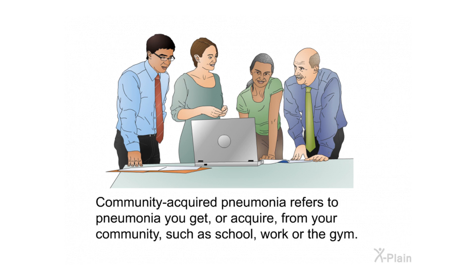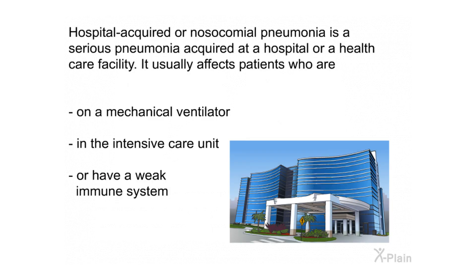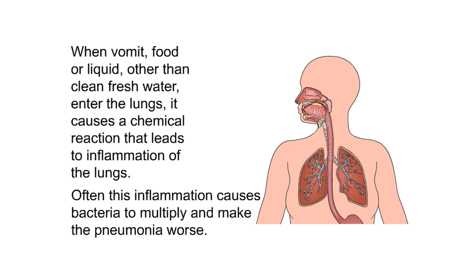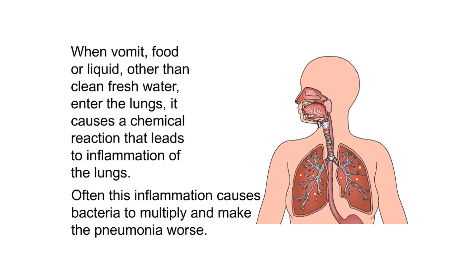Community-acquired pneumonia refers to pneumonia you get from your community, such as school, work, or the gym. Hospital-acquired or nosocomial pneumonia is a serious pneumonia acquired at a hospital or health care facility, usually affecting patients on a mechanical ventilator, in the ICU, or with a weak immune system. Aspiration pneumonia happens when anything other than air gets into the lungs — for example, when a person cannot stop vomit from entering the lungs. Patients with brain injury or conditions affecting their ability to swallow are more at risk. When vomit, food, or liquid enters the lungs, it causes a chemical reaction leading to inflammation, which often allows bacteria to multiply and worsen the pneumonia.